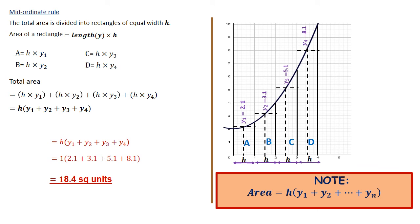That brings me to the end of the lesson on area approximation, in which we have tackled the counting technique, the trapezoidal rule, and the mid-ordinate rule. Anything else related to this will be under integration, where we compare the answers from the mid-ordinate and trapezoidal rules. Integration is not approximation — the answer is accurate — but these three techniques give approximations, which is why the topic is called area approximation. I hope you find it helpful; please like, comment, and share.